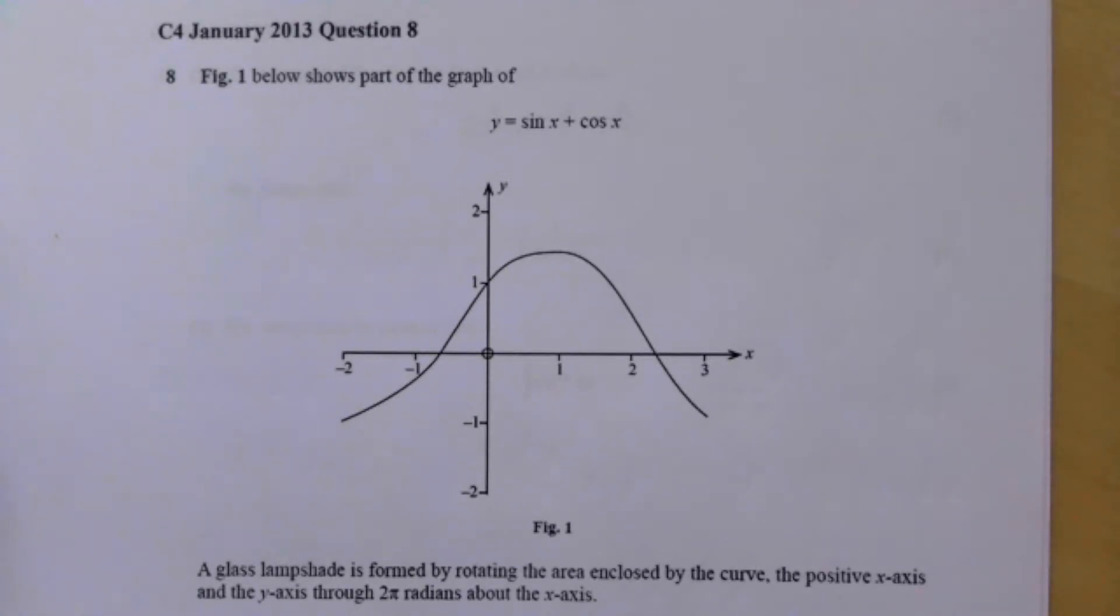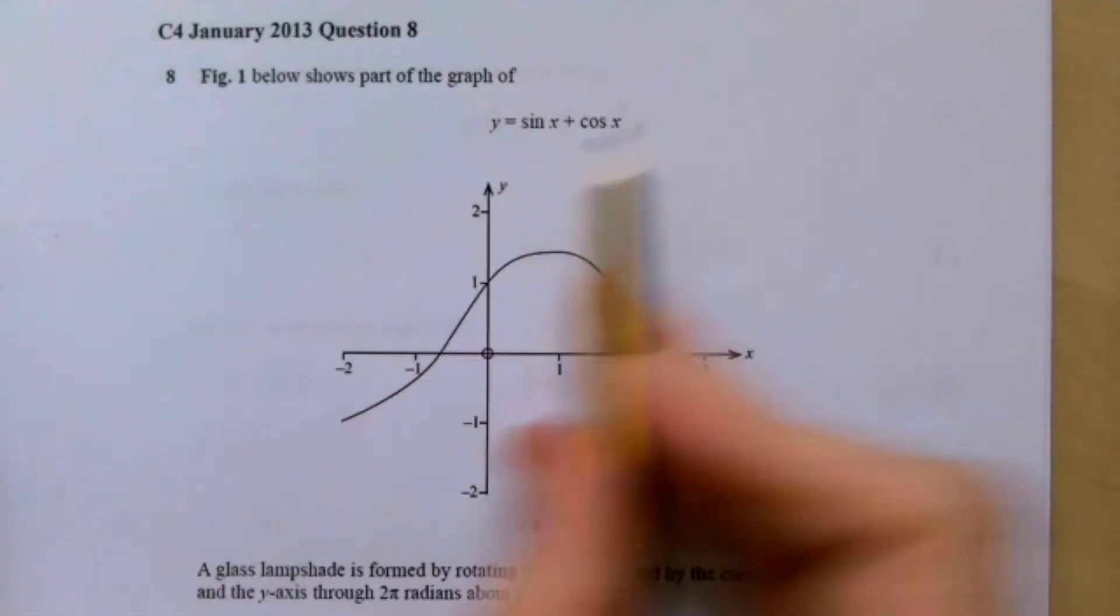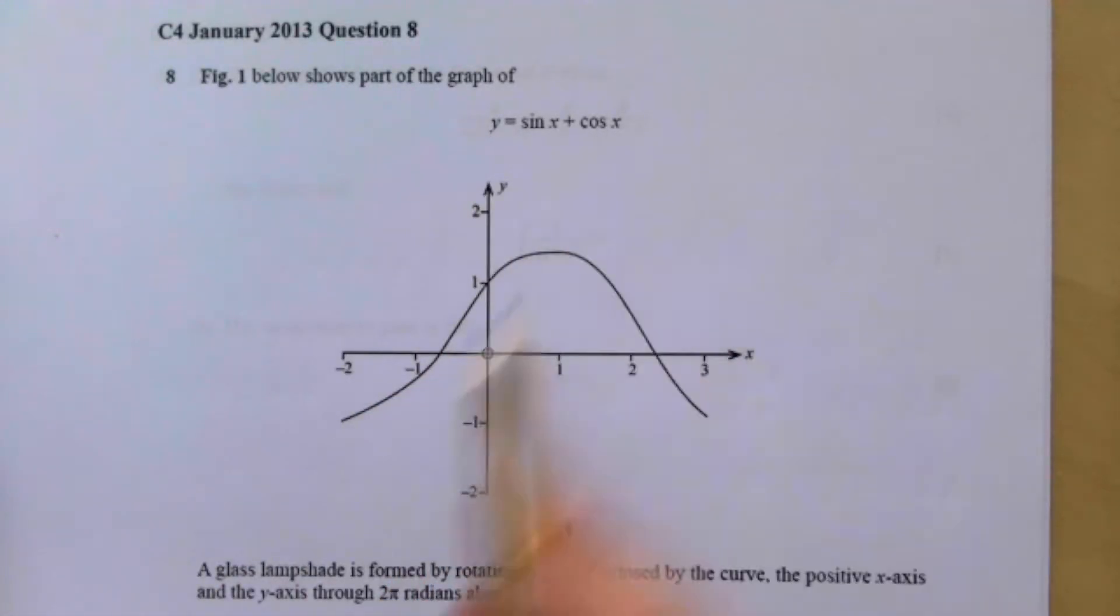This is CCEA A2 Pure Mathematics. We're looking at some integration past paper questions. This one is from C4 January 2013, Question 8. Figure 1 below shows part of the graph y equals sine x plus cos x.